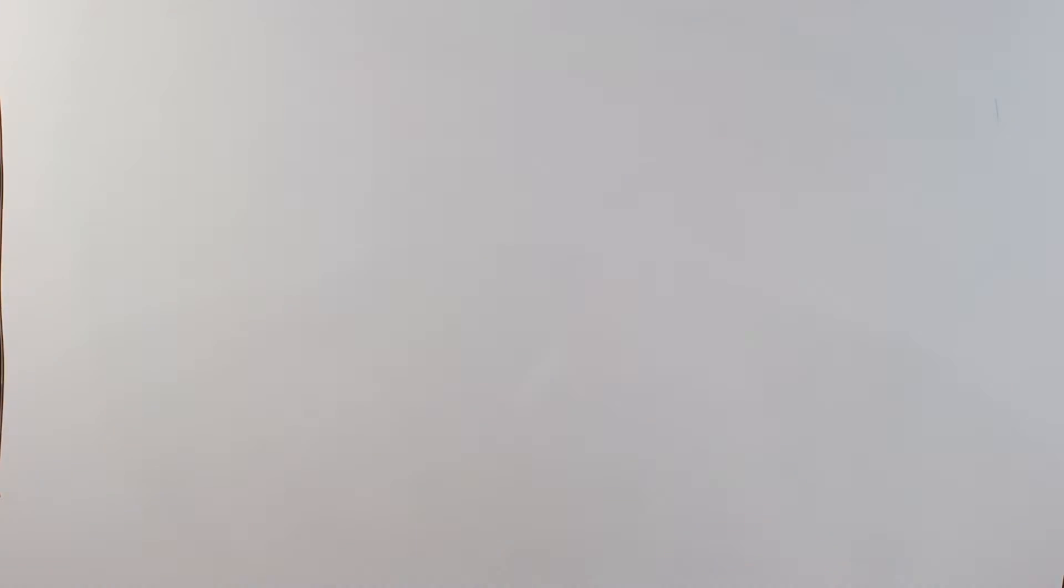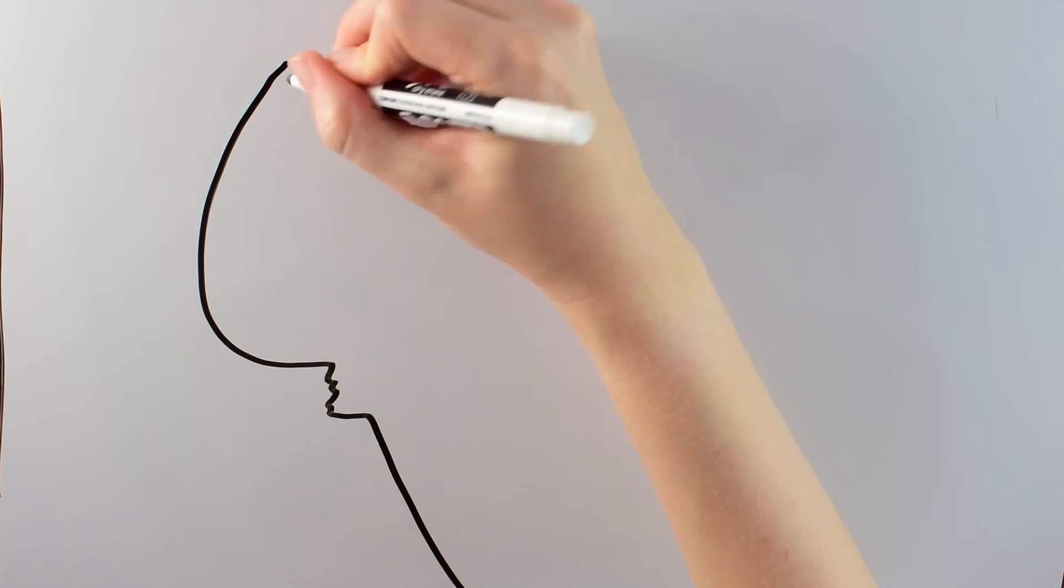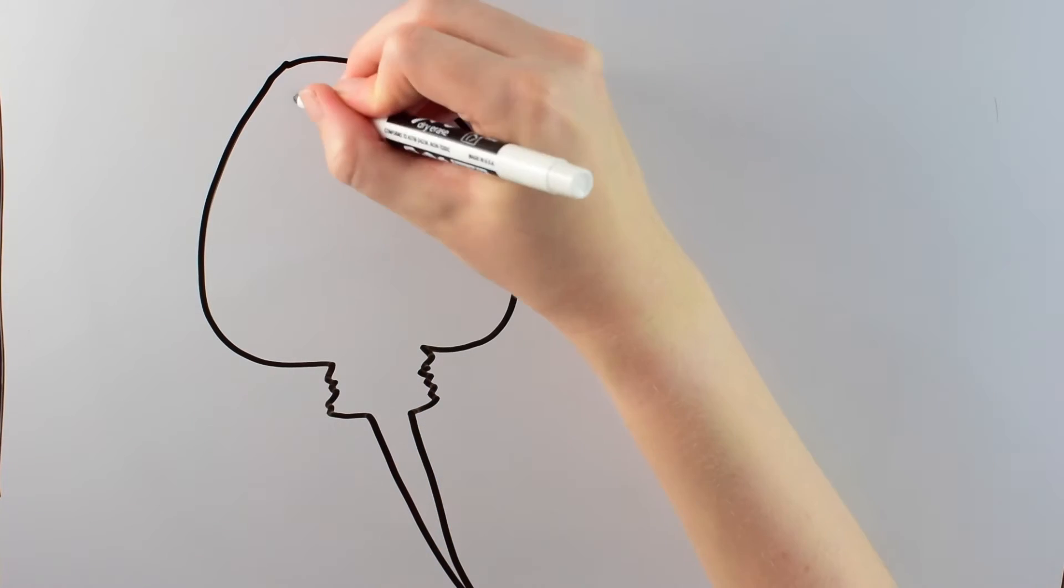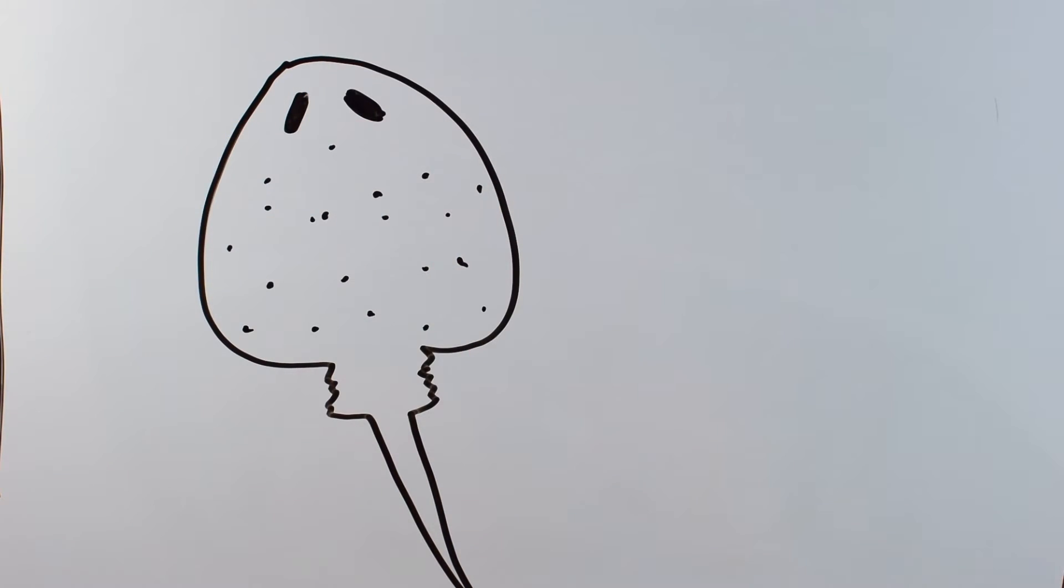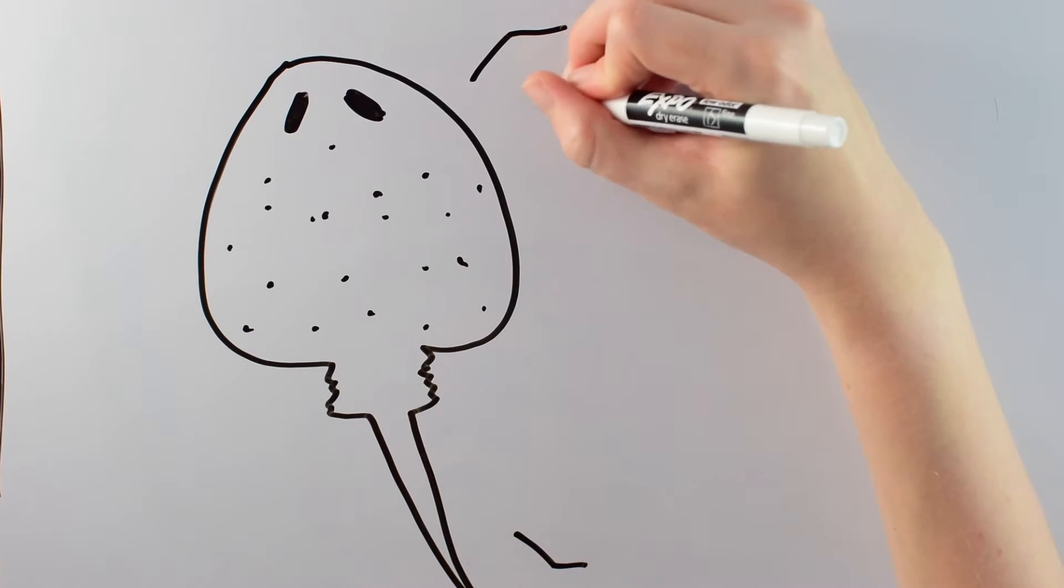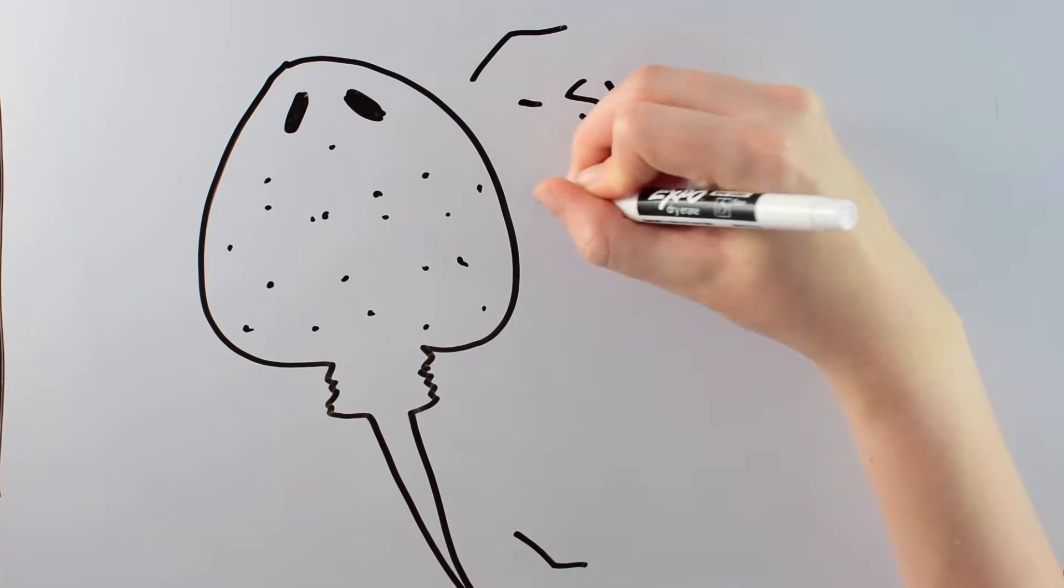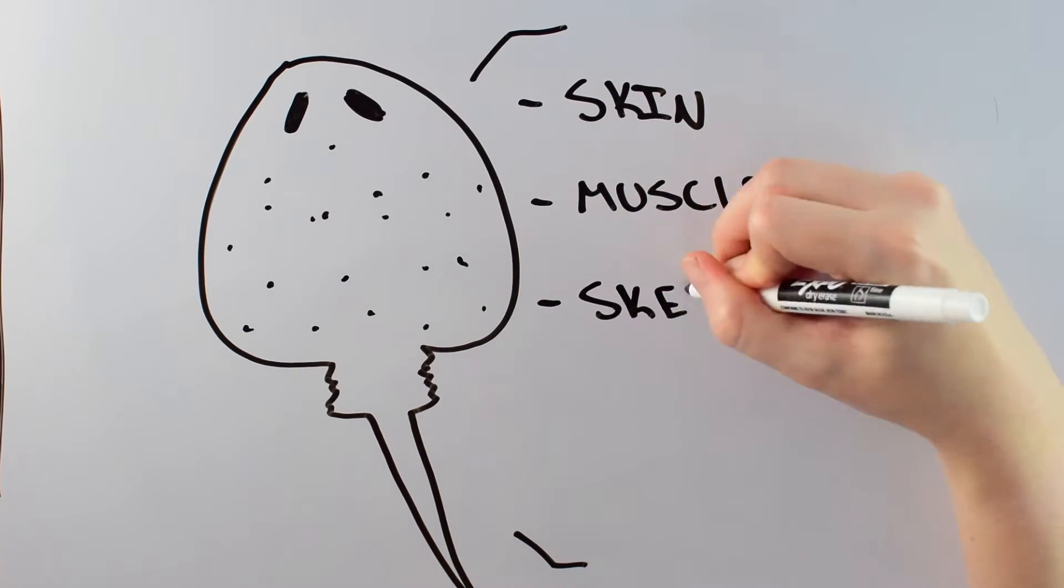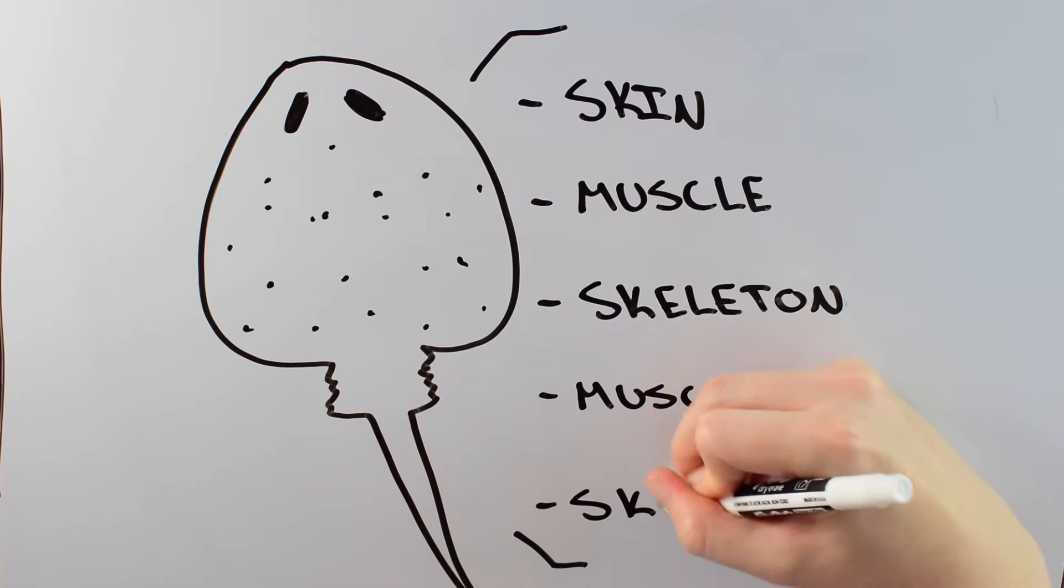So how do you go about building a robot that swims like a stingray? Well, the answer is that you go to the source and look at how stingrays themselves swim. And what you'll find if you look at a stingray is that they really need five different layers to be able to swim. From top to bottom, they need a layer of skin, a layer of muscle, a skeleton, and then another layer of muscle and another layer of skin.